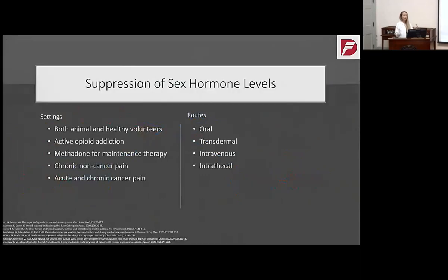We have a ton of data on the settings and routes where opiate-induced androgen deficiency occurs. We've seen this in both animal and healthy volunteers, in active opiate addiction, methadone for maintenance therapy, chronic non-cancer pain, as well as acute and chronic cancer pain. We've seen it not only via oral routes — transdermal, intravenous, and intrathecal routes all have the potential to reduce sex hormones.